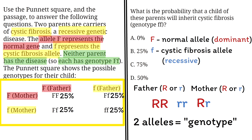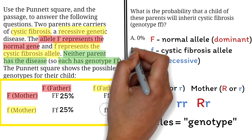Each genotype has a 25% chance of appearing in the child. Since only the genotype ff causes the cystic fibrosis disease, there is only a 25% chance that the child would inherit the disease. So the correct answer is B.